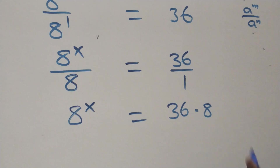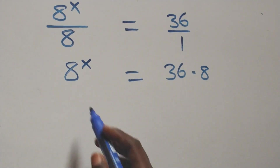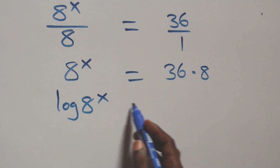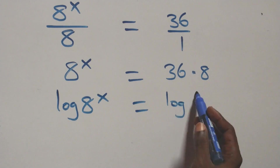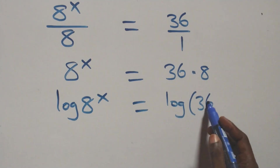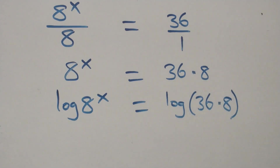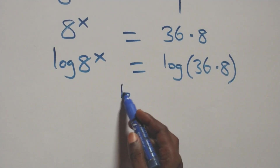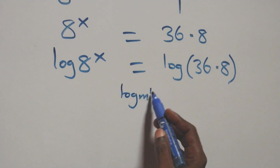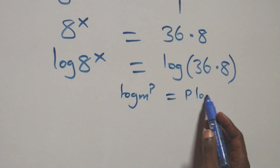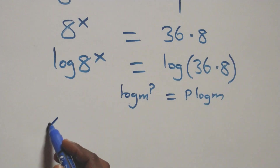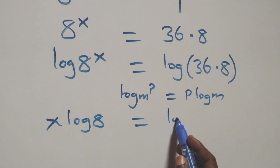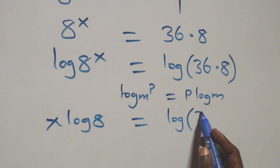Next, we take the log on both sides: log of 8 raised to power x equals log of 36 times 8. We apply the power rule of logarithms — log m raised to power p equals p log m — so we get x log 8 equals log of 36 times 8.